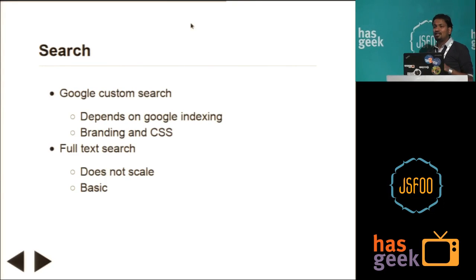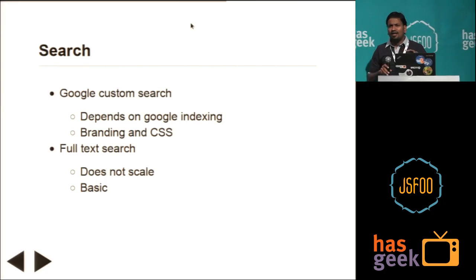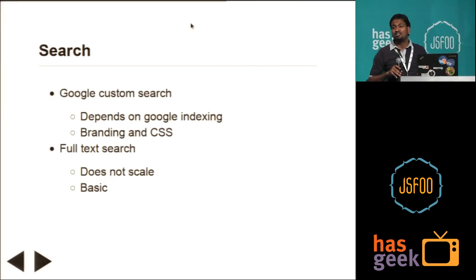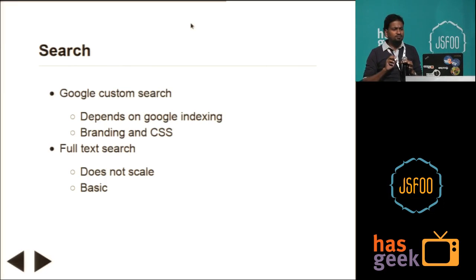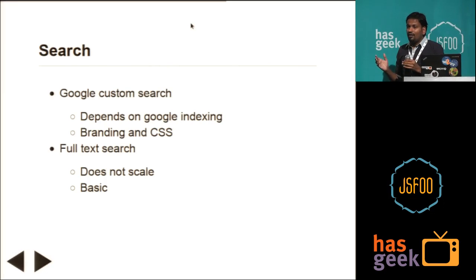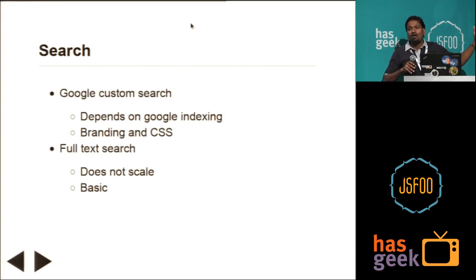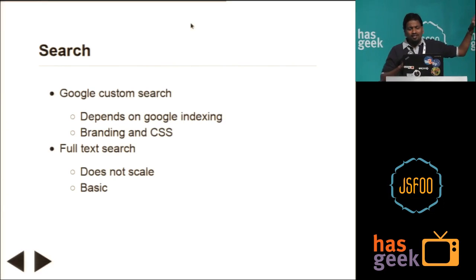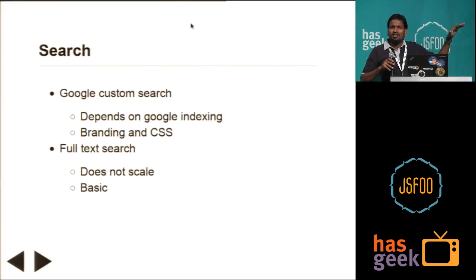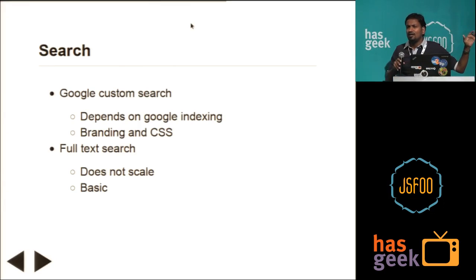Now, what about the third feature — search? Search you can do with something called Google Custom Search, or Google CSE. It's good, but there are two main disadvantages. First, it depends on Google indexing, so if Google takes a lot of time to index your page, the search is not immediately available — it depends on when Googlebot crawls your website. Second, Google branding will be there; it will not be your own branding and CSS. As a second option, we can go with full text search. There are still some problems — it does not scale and it's a very basic search — but we'll look at how to use this using JavaScript.